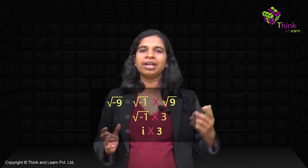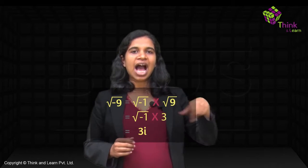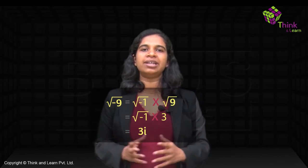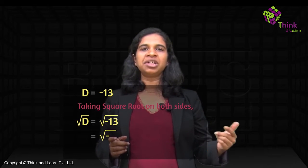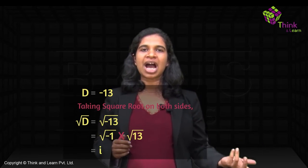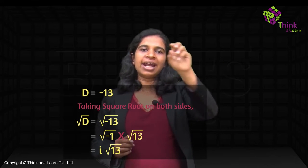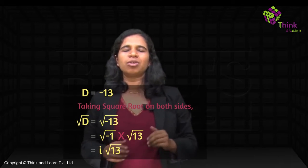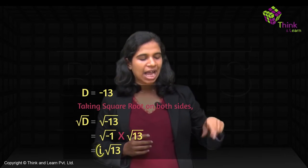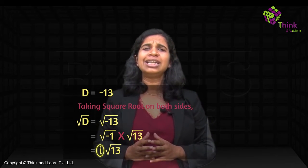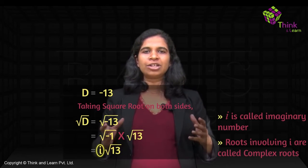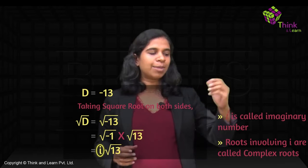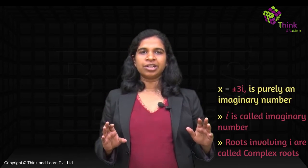So √(-9) becomes 3i. This i solves all our problems where D is negative. If D was -13, √D = √(-13) = √(-1) × √13 = i√13 — you put an i and convert D from negative to positive. A purely imaginary number is something like ±3i. When you have a real part plus an imaginary part, we call it a complex number.